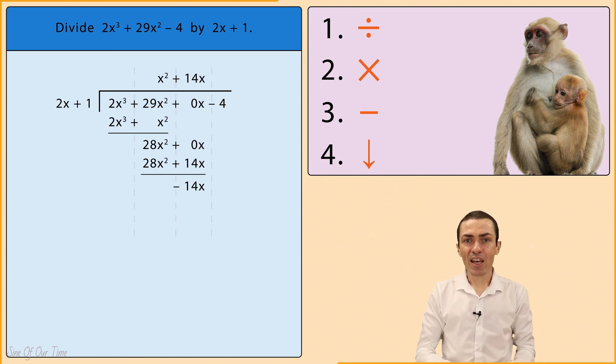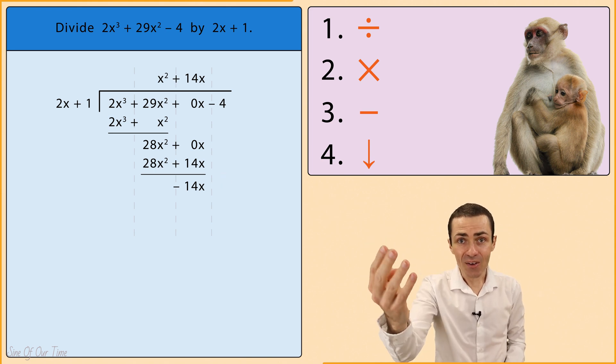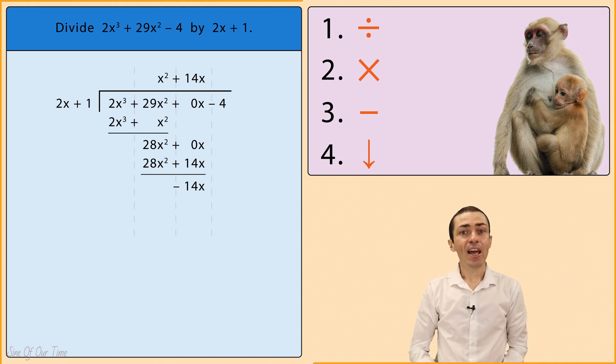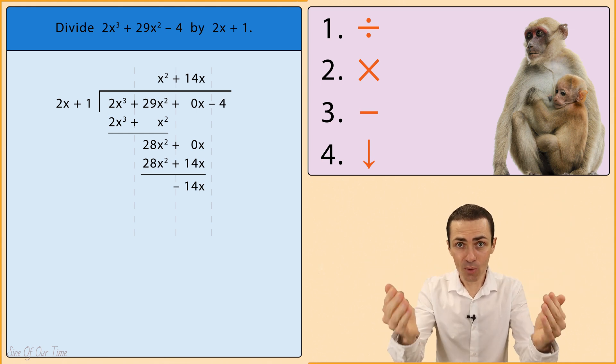However, we notice that there is no term to the right of 14x, which brings us on to step 4: Bring down. We simply take that negative 4 and bring it down and write it alongside negative 14x.